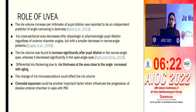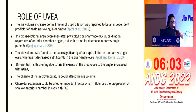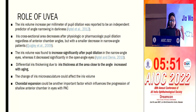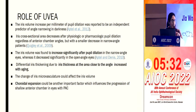In angle closure patients, iris volume typically increases after dilation, thereby crowding the eye further and potentially precipitating an angle closure attack. There is also differential iris thickening — the iris nearest the ciliary body thickens with age. Choroidal expansion is considered another important cause of angle closure: it crowds the eye, the iris-lens diaphragm is pushed forward, and that precipitates an acute attack.